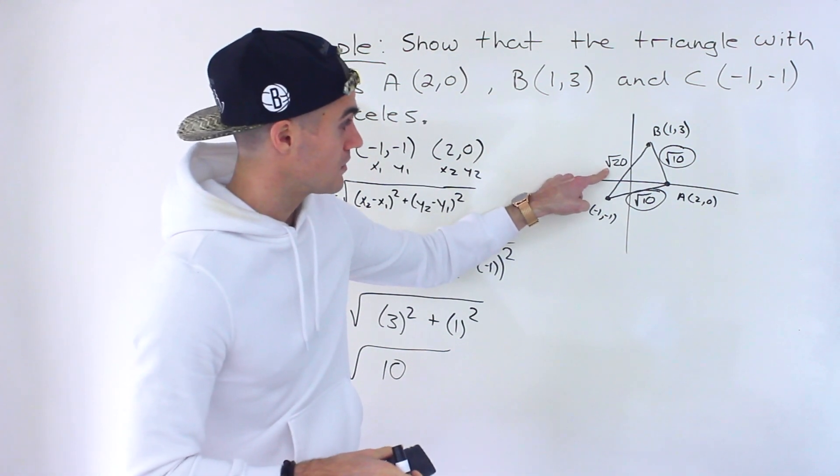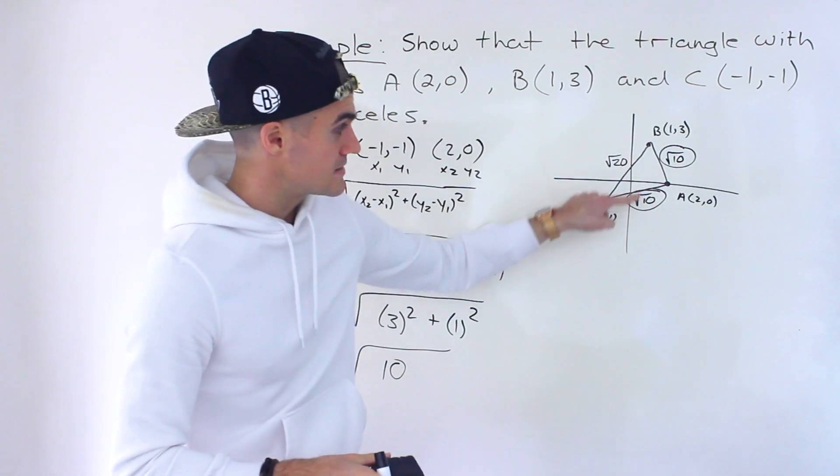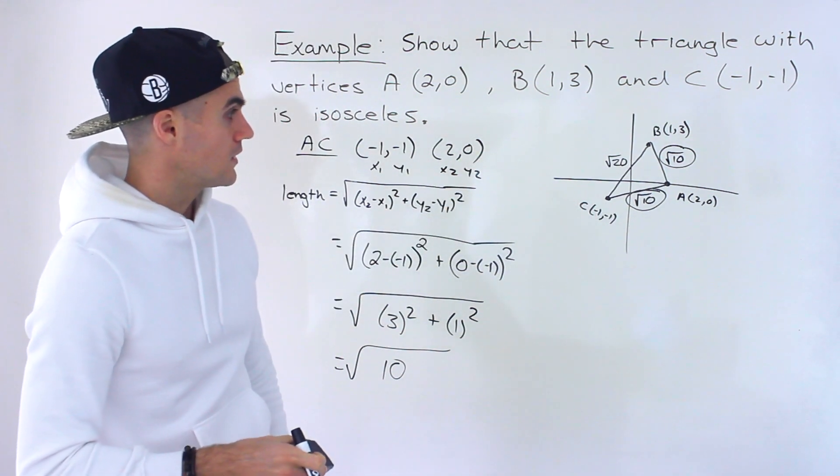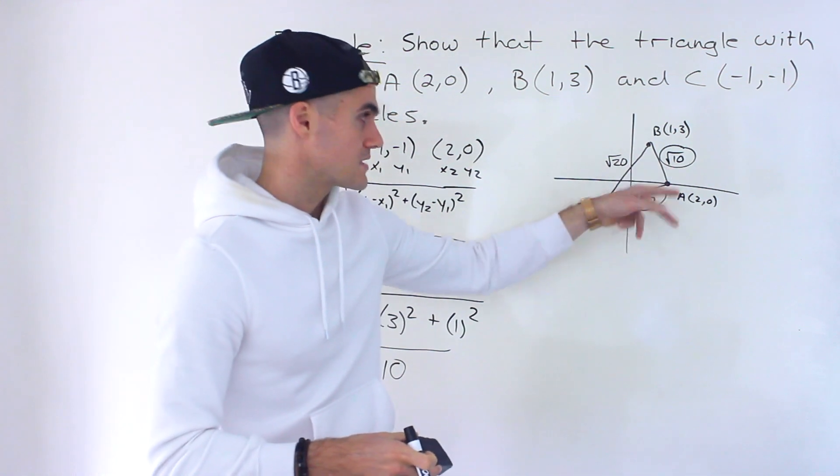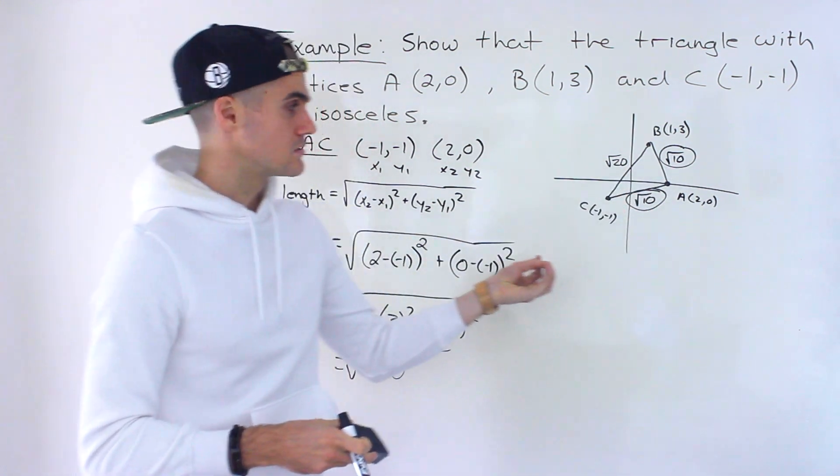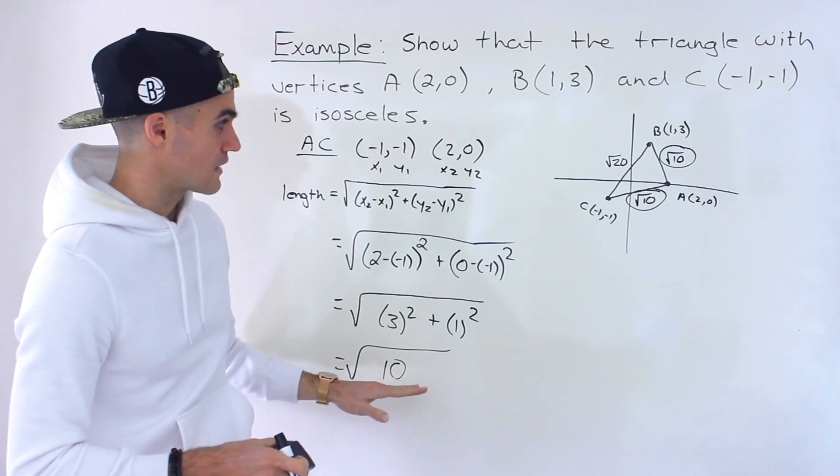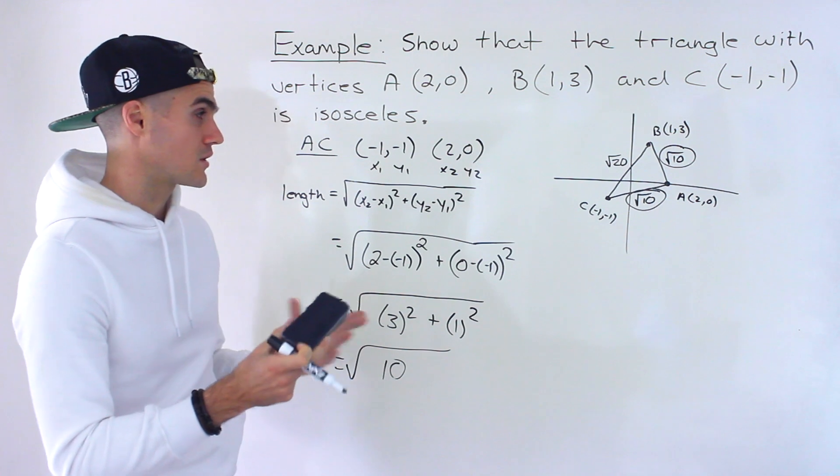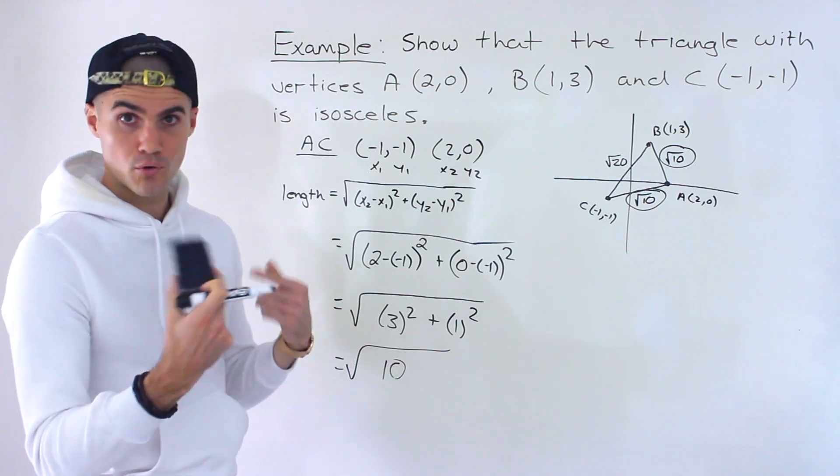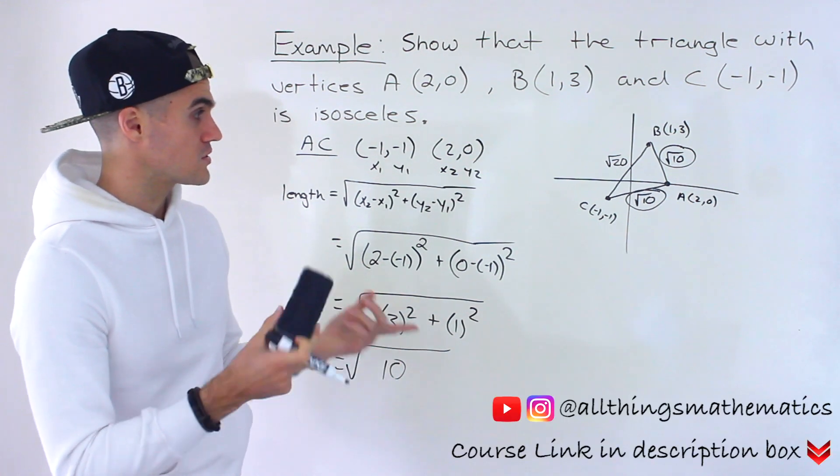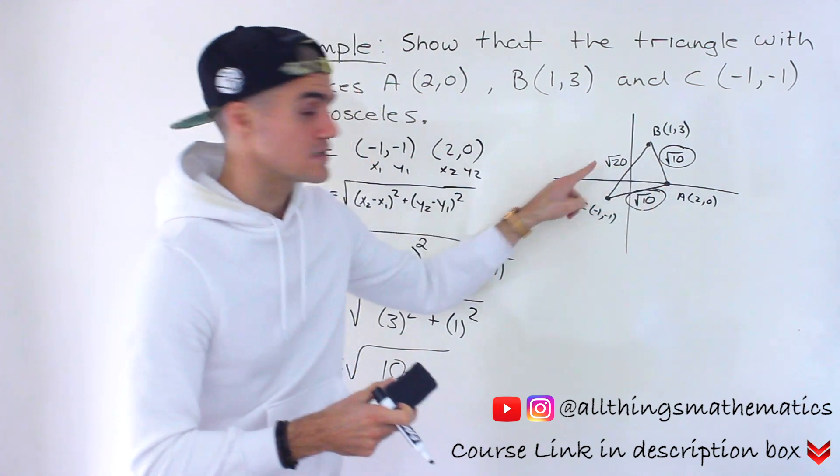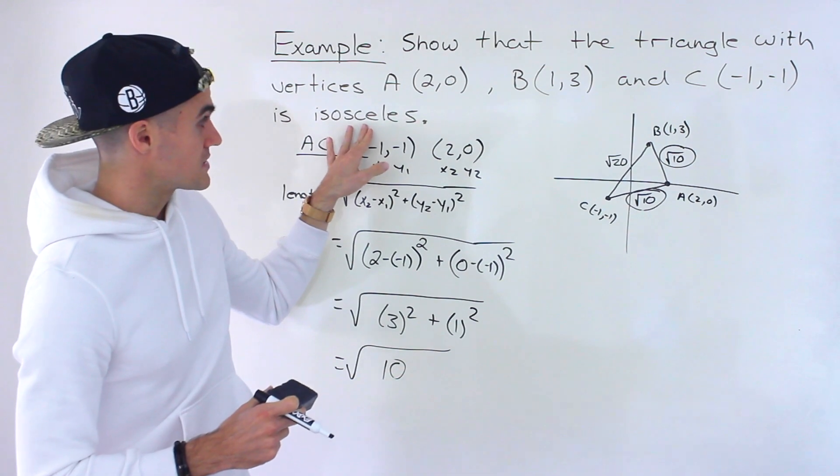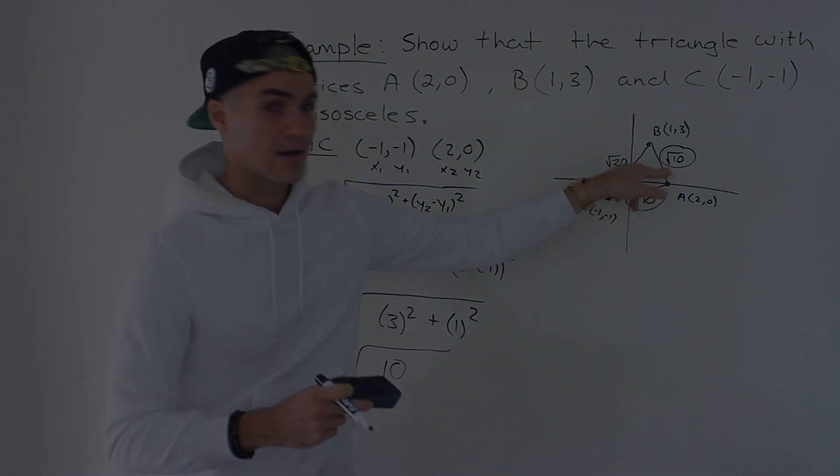If this length here was the same as these two, then it would be an equilateral triangle. All right, so √10, √10. Sometimes you'll see these solutions be in decimals. I left them as exact values, but if you want to plug it into your calculator, you can get the decimals as well. Sometimes they'll ask you for certain characteristics like the perimeter, for example. So with the perimeter, you would just take all of these, add them up. But we weren't asked that. We were asked to show it's an isosceles. You find all the lengths, √10 and √10.